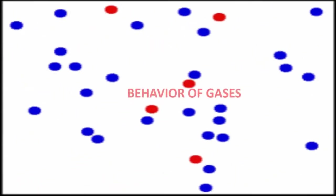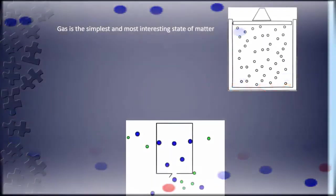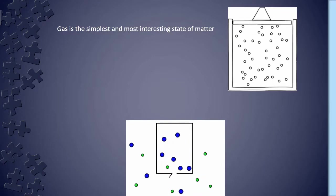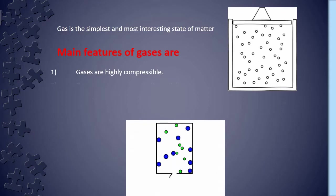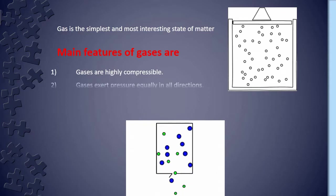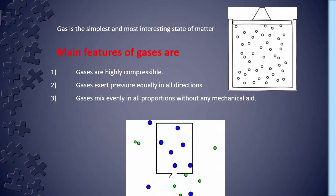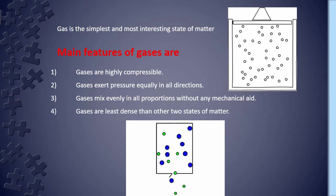Behavior of Gases. Gas is the simplest and most interesting state of matter. Main features of gases are: Gases are highly compressible. Gases exert pressure equally in all directions. Gases mix evenly in all proportions without any mechanical aid. Gases are least dense than other two states of matter.